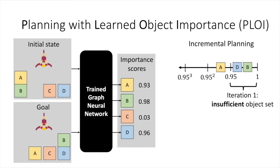In the second phase, we incrementally plan, adding more objects at each iteration until a solution has been found by a geometrically decreasing threshold on the importance scores.